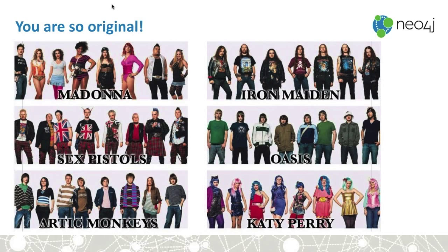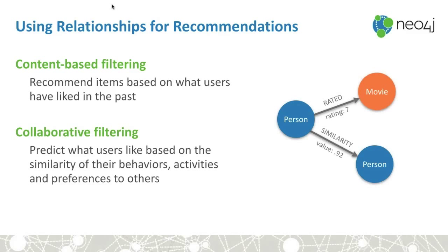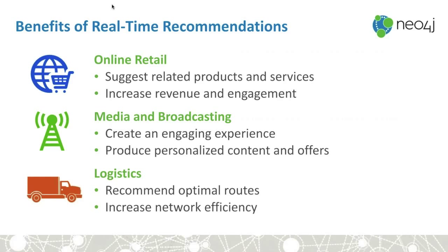Usually what people do is combine both approaches — hybrid recommendations. We take content-based filtering and collaborative filtering and squish them together. We get better results this way. Most recommendation systems in the wild are not very simple; they're a combination of multiple things. Sometimes they'll have completely different types of recommendations running, scoring them, and at the end using those scores with some weights to give the user the actual recommendation, with a little bit of fuzziness and some A/B testing.